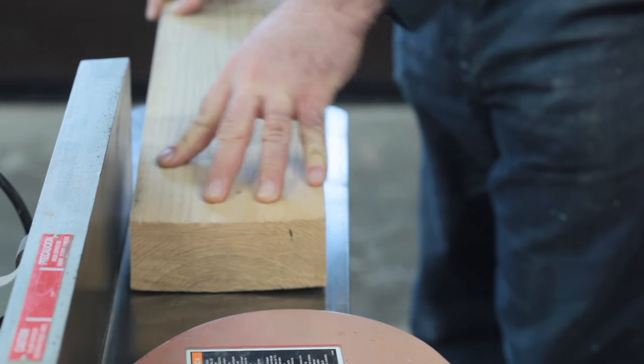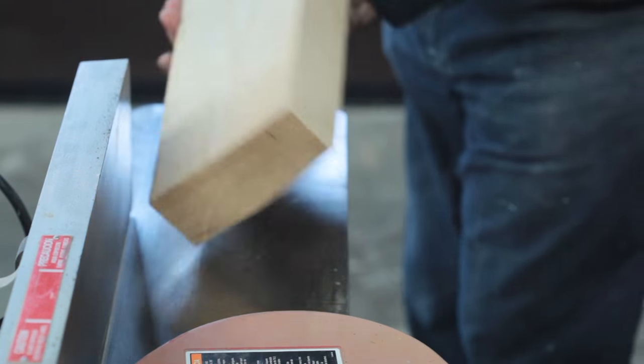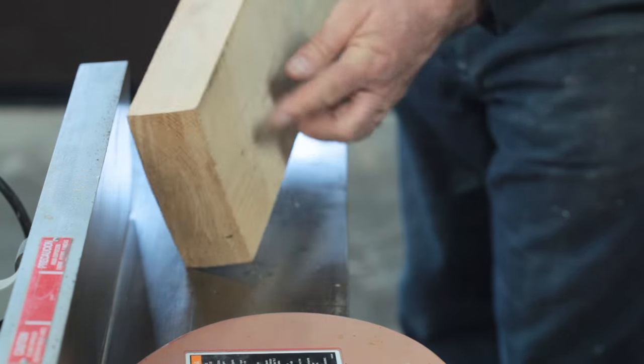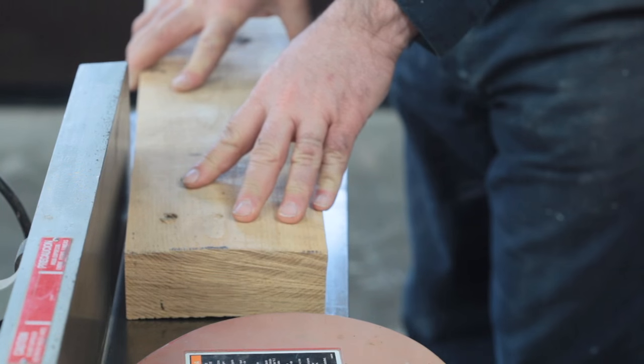You see how that board rocks back and forth? It's very difficult to mill a flat face that way with that sort of starting point. If you've got a concave face you put that down first and you'll have a very stable starting point.